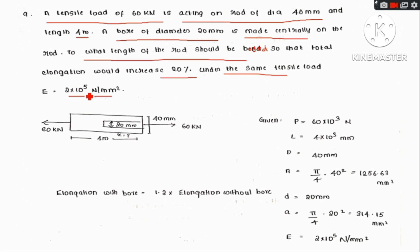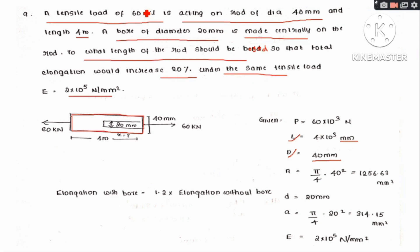We will draw the figure. A tensile load of 60 kN is acting on a rod of diameter 40 mm and length 4 m. The length is converted to 4 into 10 raised to 3 mm, diameter is 40 mm, and the active tensile load is 60 kN.